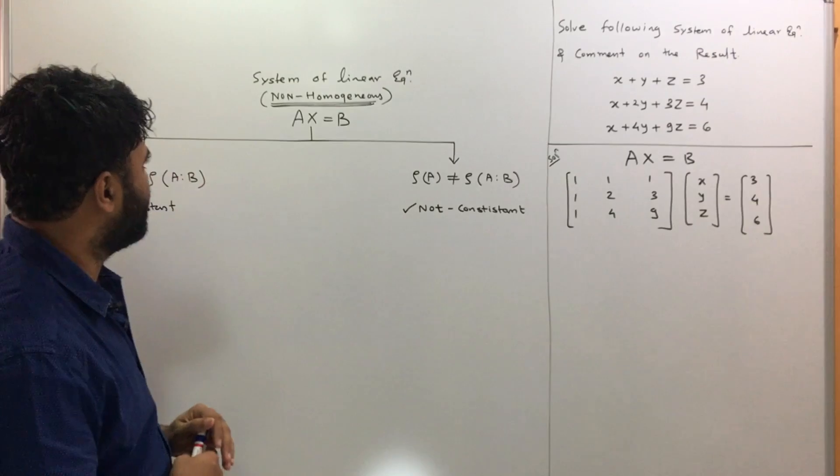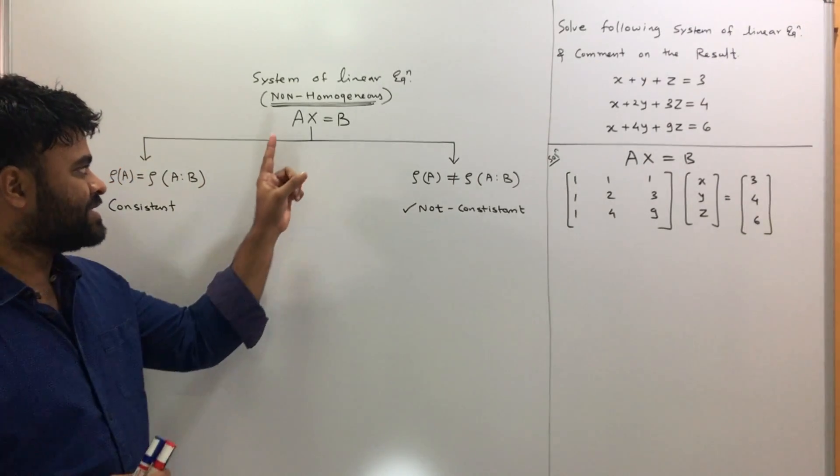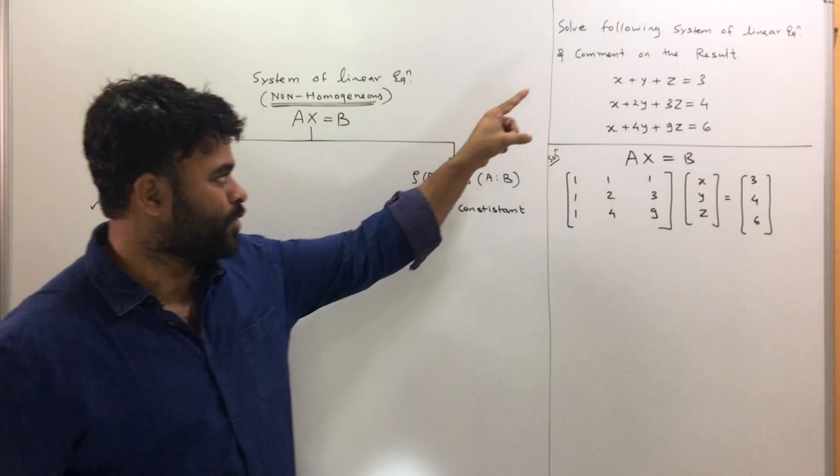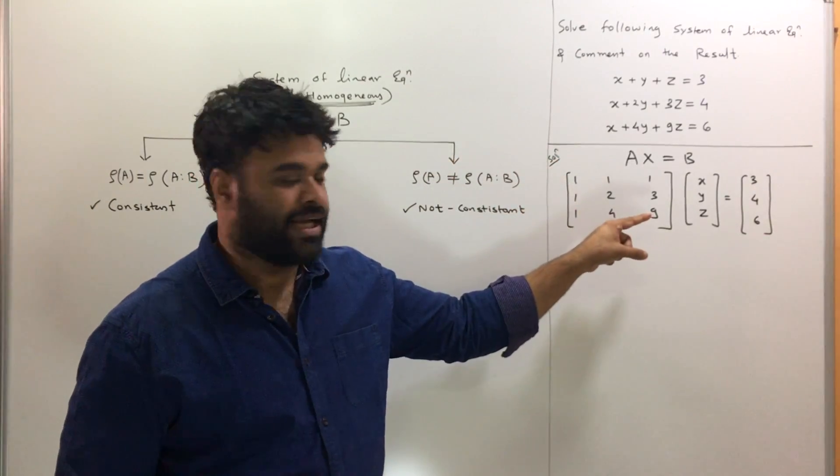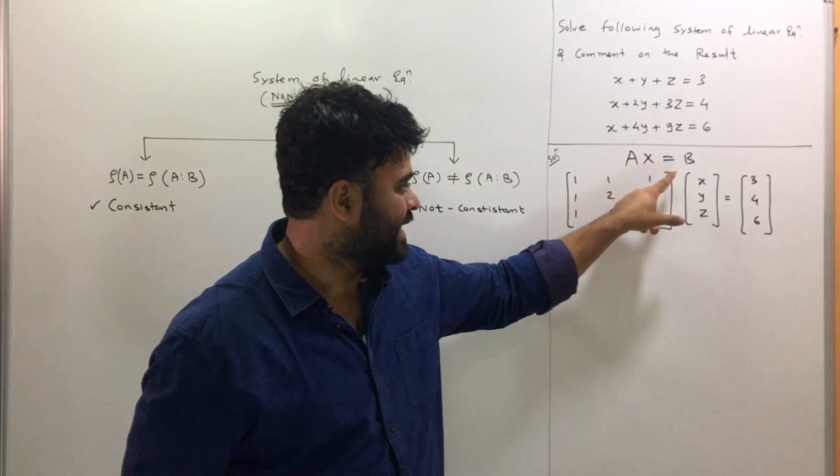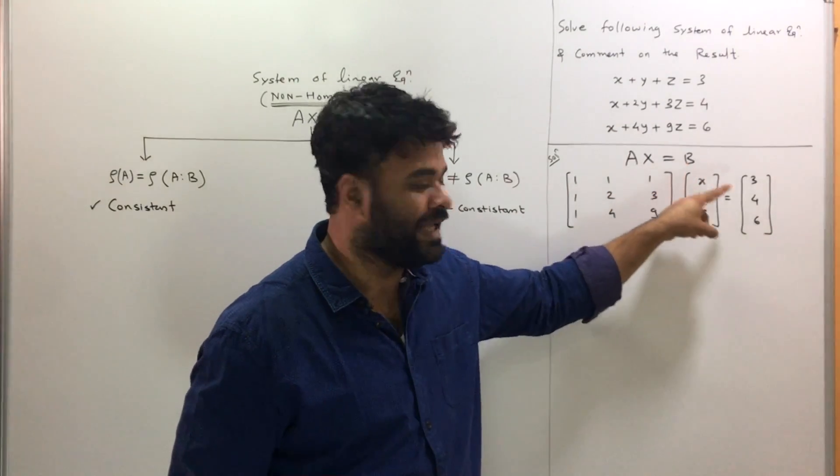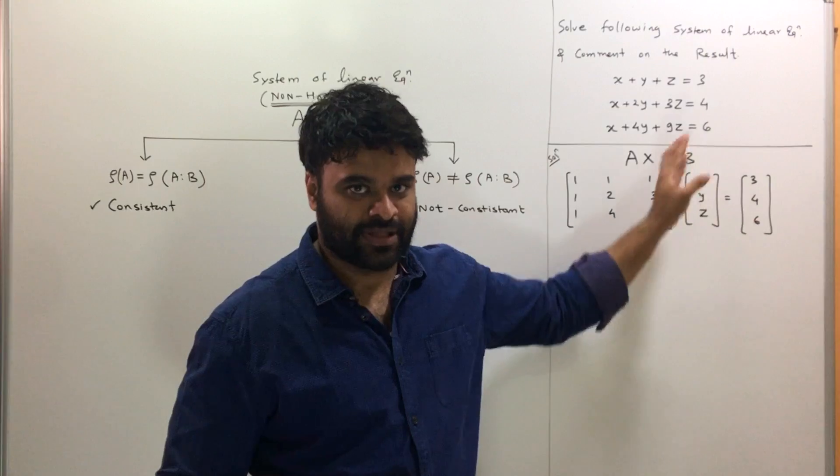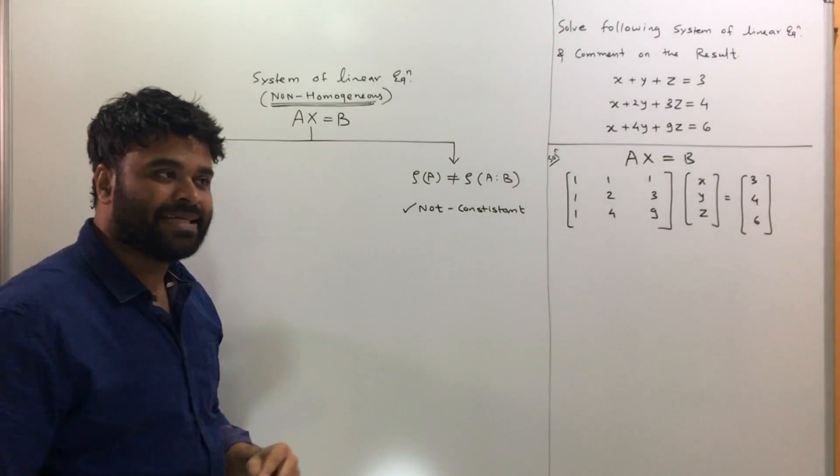The concept is written over here. Now, a system of linear equations is written as AX = B. I have expressed those equations in the form of matrices. You can see A is the coefficient matrix, X is the variable matrix, and B is the matrix of constants on the right-hand side.